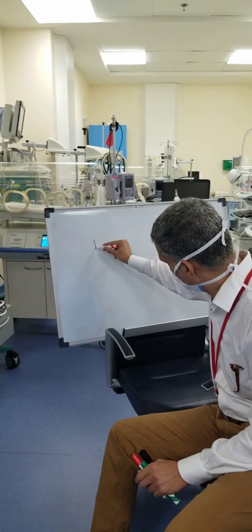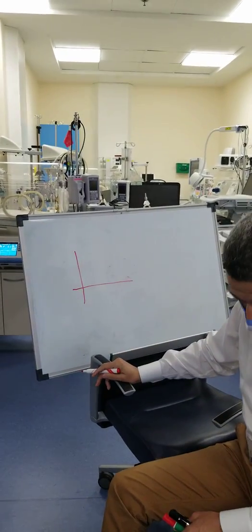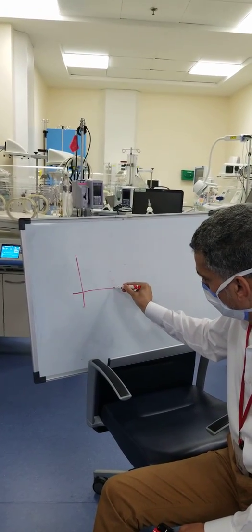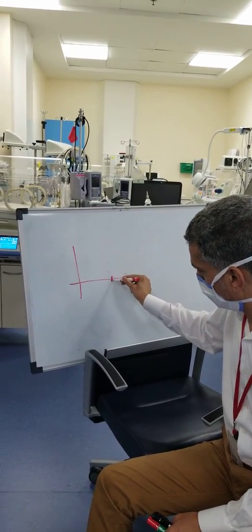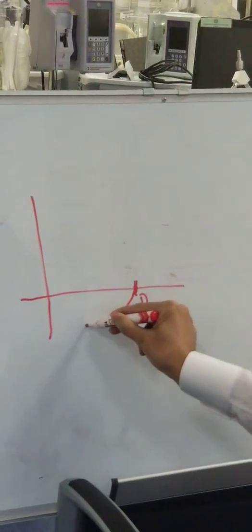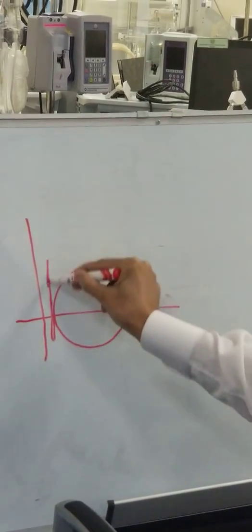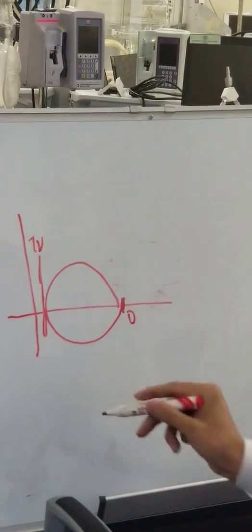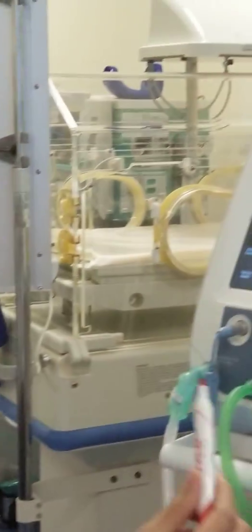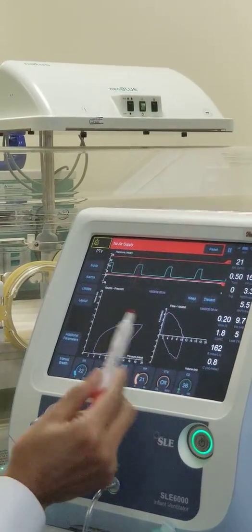The volume-flow loop of the pulmonary function is done like this — it starts from the FRC and goes up and around, tracing the tidal volume. Now in the ventilator it's a little bit different: you have flow that is positive and negative, representing inspiratory and expiratory phases.